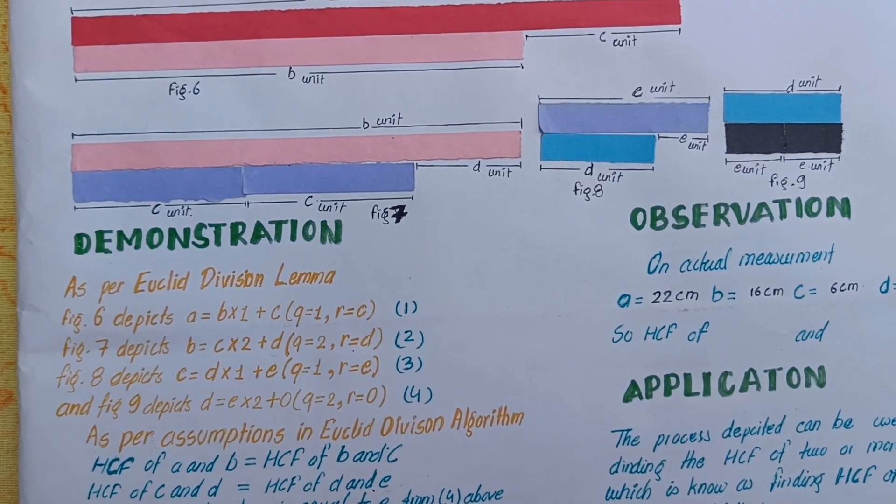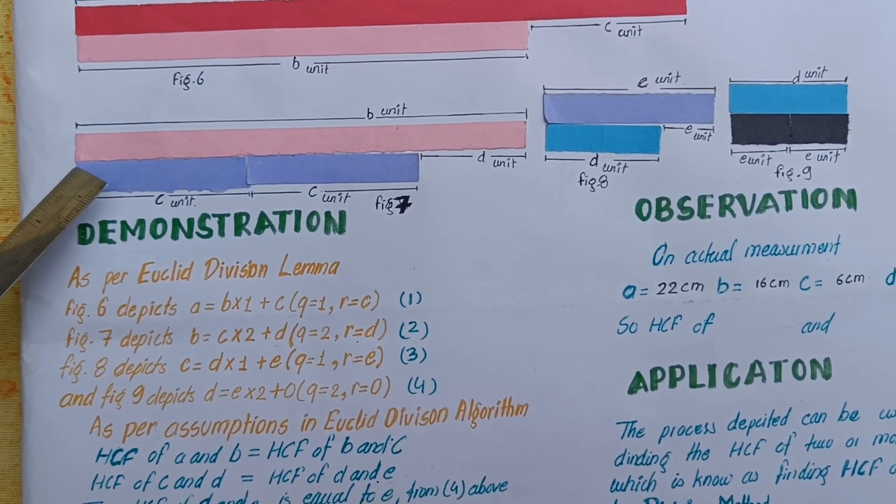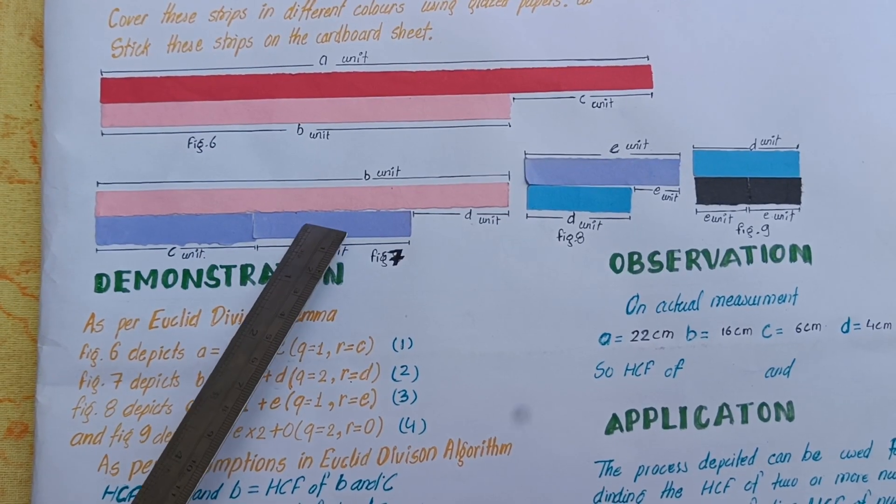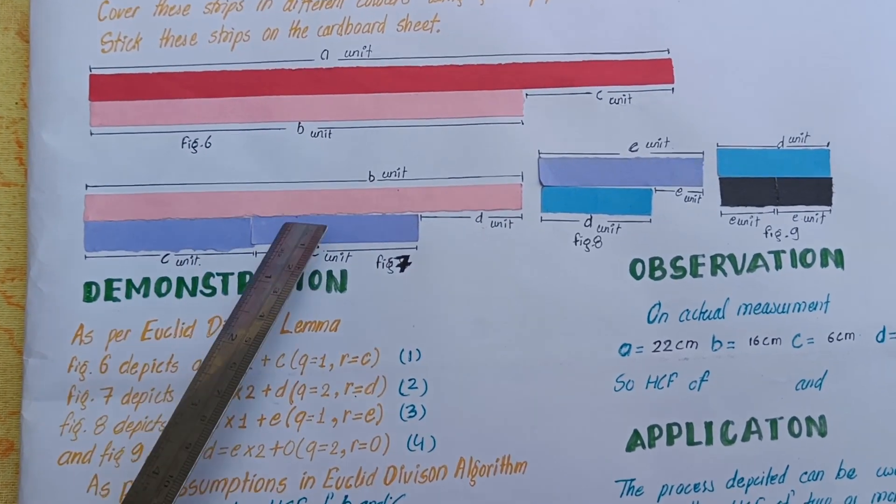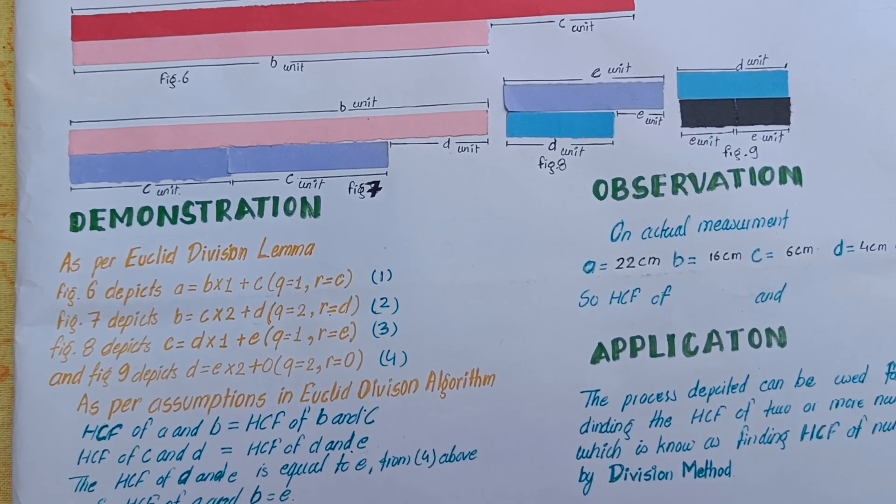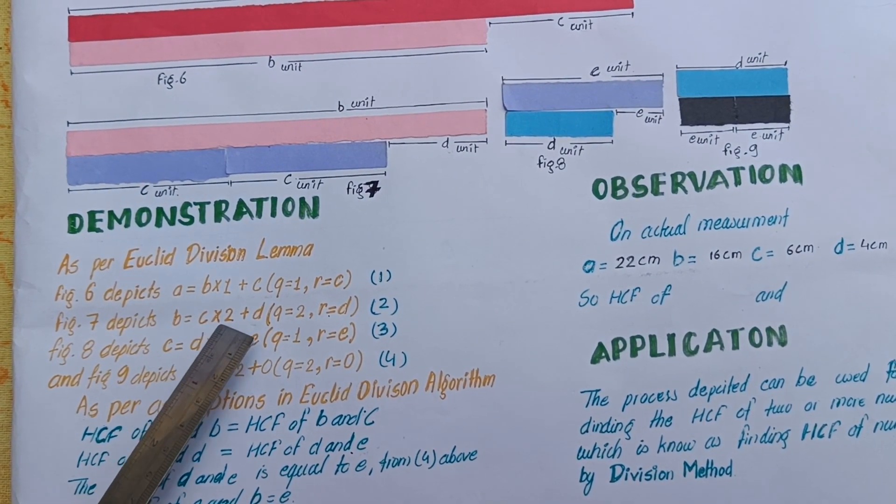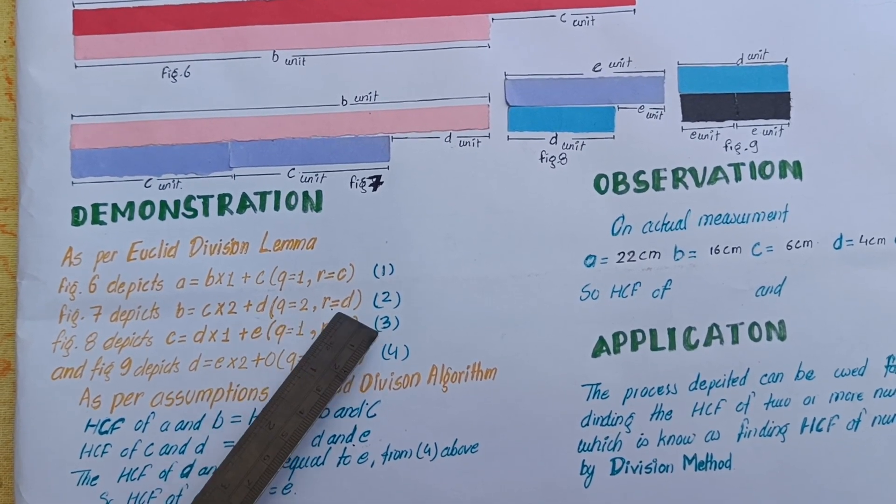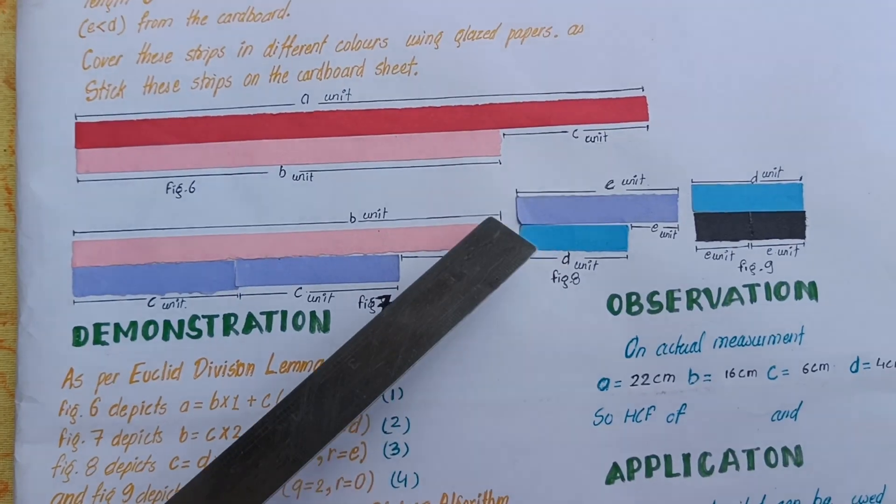In the second step, we divide B by C. C divides B two times and D is the remainder. Hence B equals C multiplied by 2 plus D. 2 is the quotient and D is the remainder.